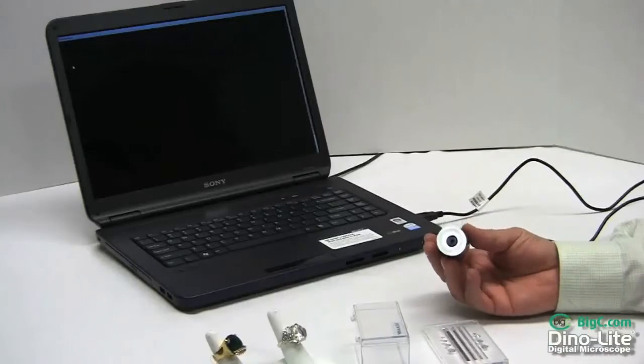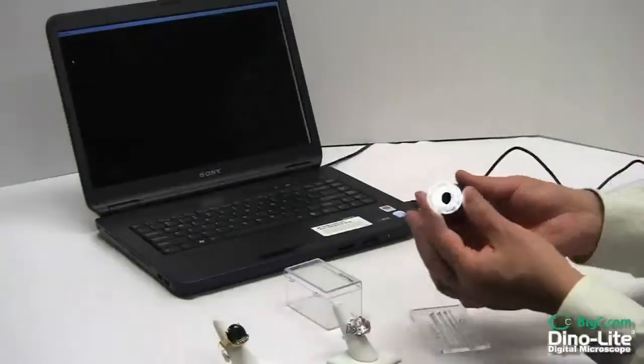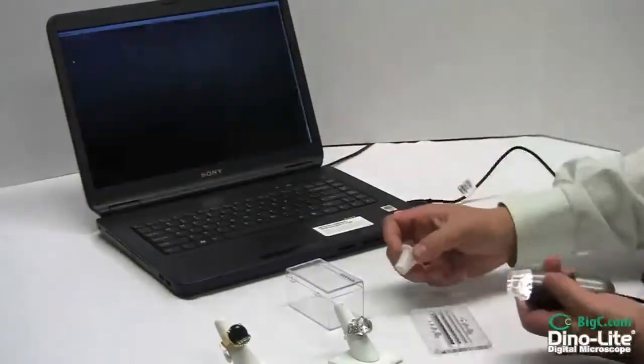In order to take it out, hold the scope firmly and twist the diffuser while pulling at the same time.